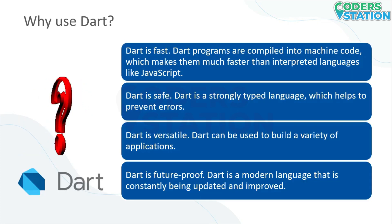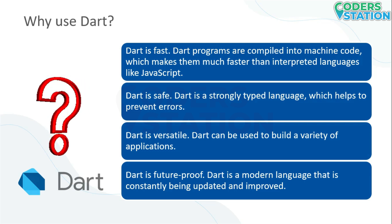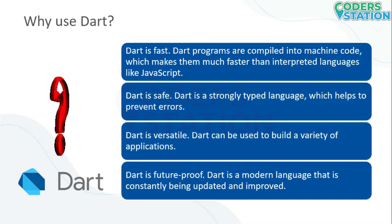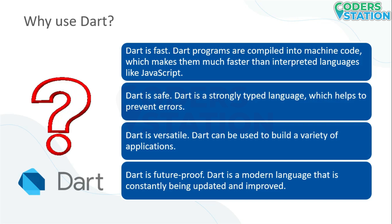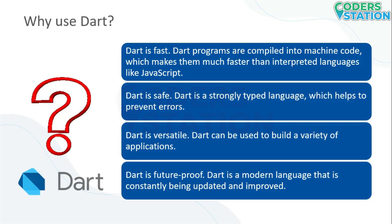Why use DART? There are many reasons to use DART. Here are a few of the most important ones. DART is fast — DART programs are compiled to machine code, which makes them much faster than interpreted languages like JavaScript. DART is safe — DART is a strongly typed language, which helps to prevent errors.